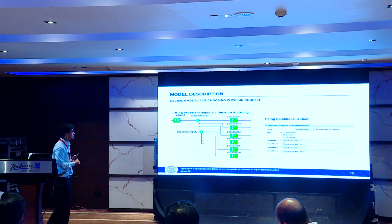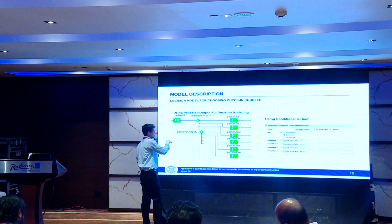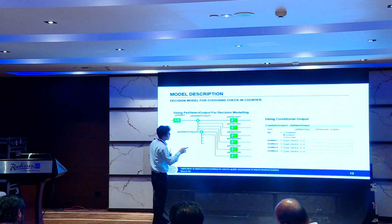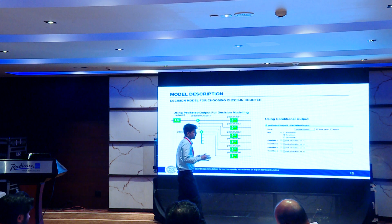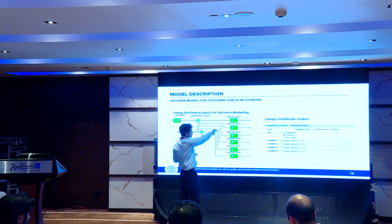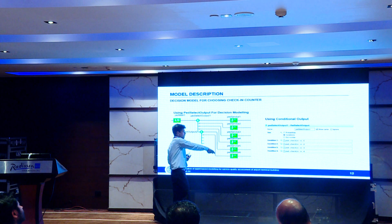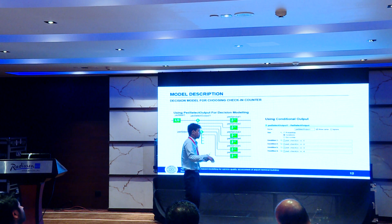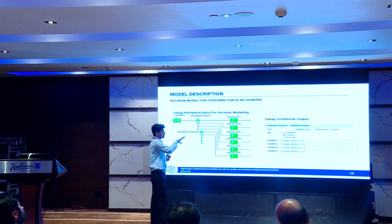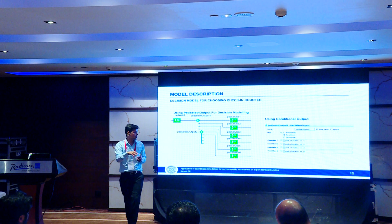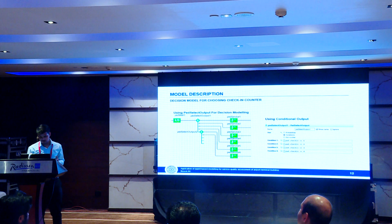Regarding how passengers reach their corresponding check-in point, this can be achieved by probability distribution — for example, 60 percent of passengers go to check-in counter one and 40 percent to check-in counter three. Alternatively, a passenger can choose their check-in counter based on a preset condition such as their airline.